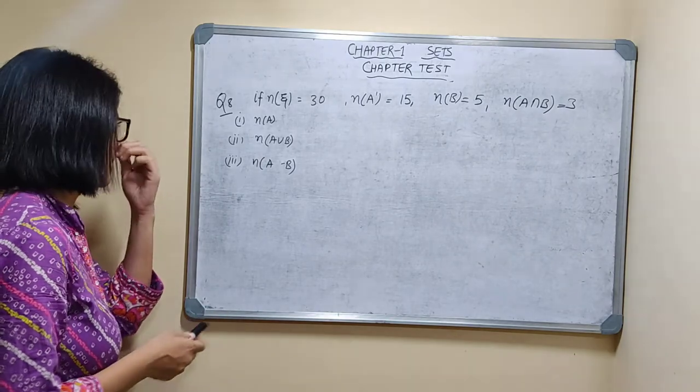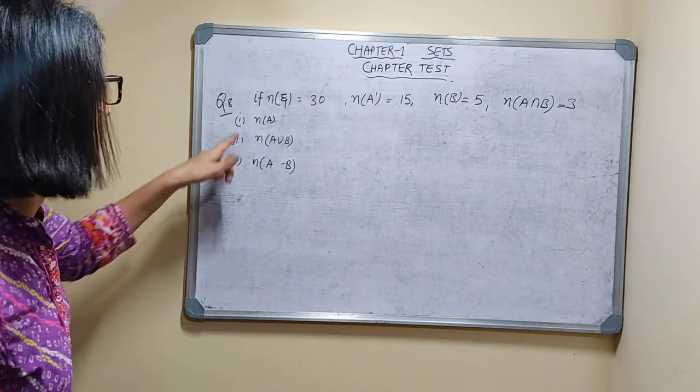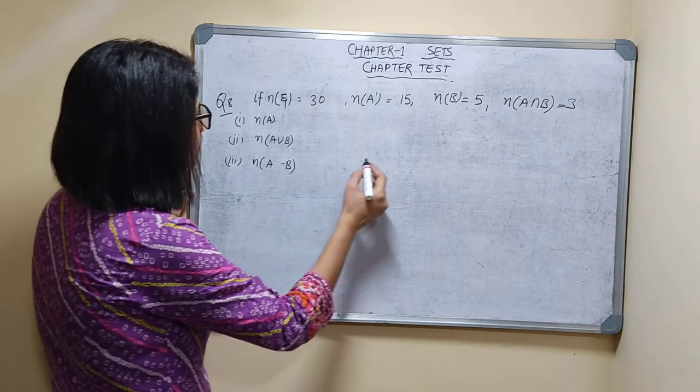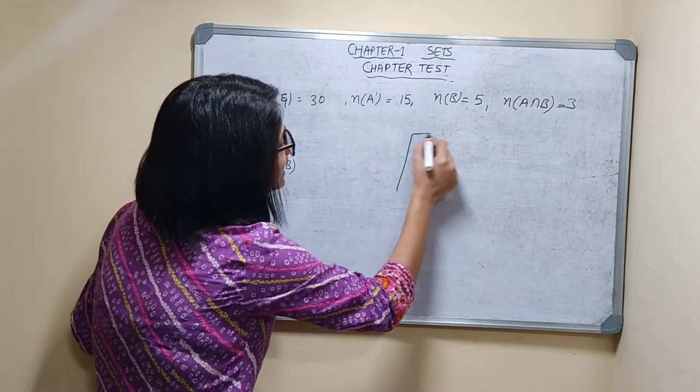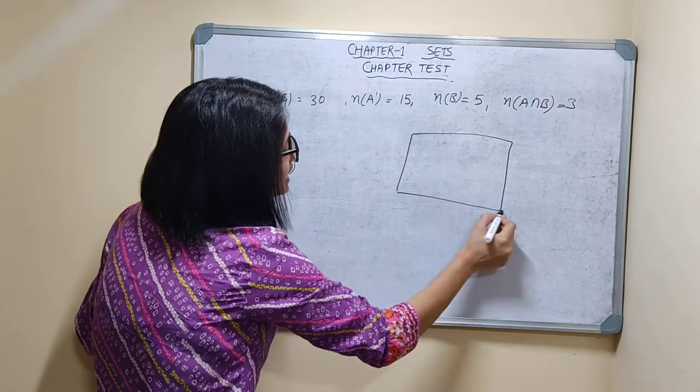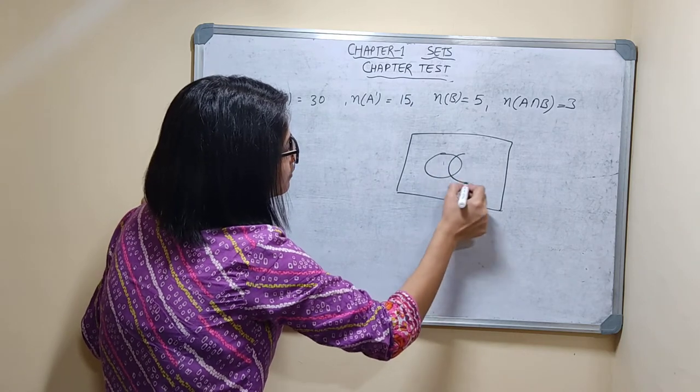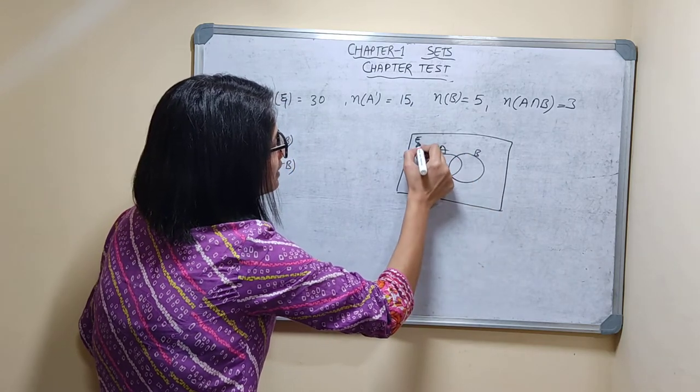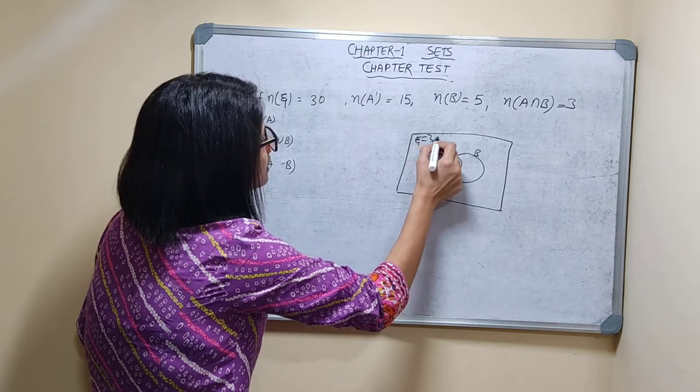Question number of elements. Find n(A). This is a Venn diagram. I am showing one. This is A, this is B. Epsilon is equal to 30.